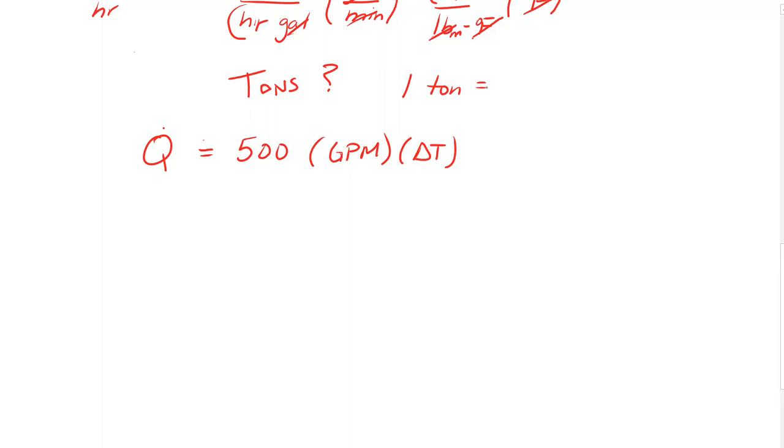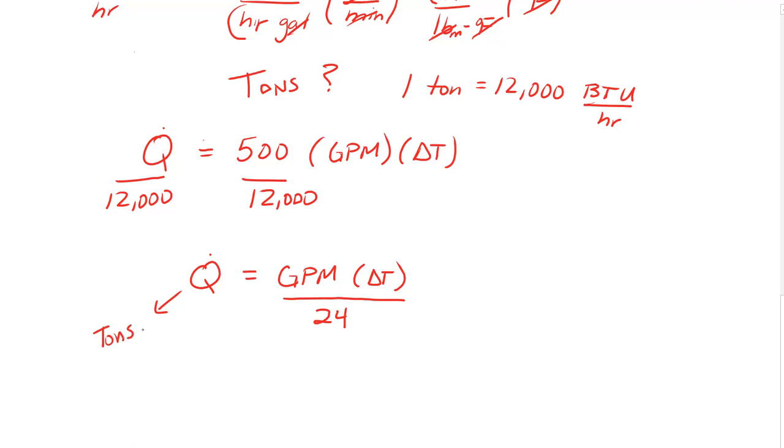One ton is equal to 12,000 BTU per hour, so we divide both sides of our formula by 12,000. What we are left with is GPM delta T divided by 24. This now gives us the energy in tons. So go out and start calculating that sensible heat for your HVAC components with confidence. 500 GPM delta T. Till next time.